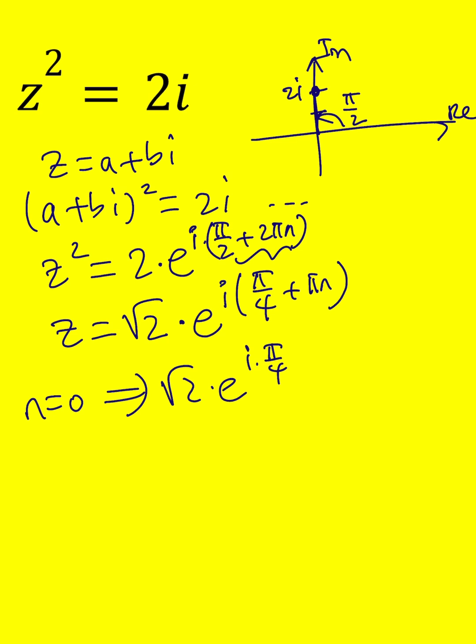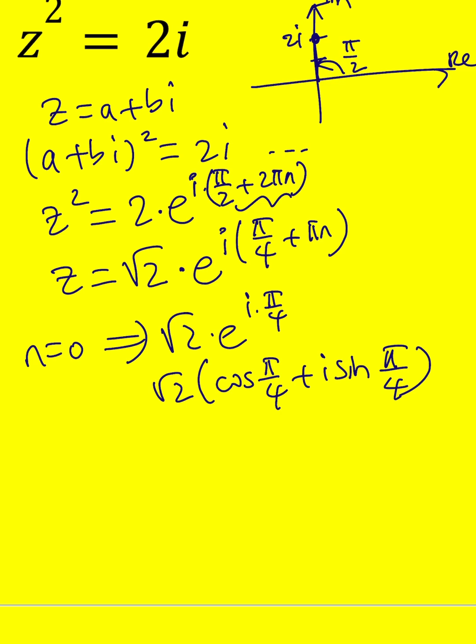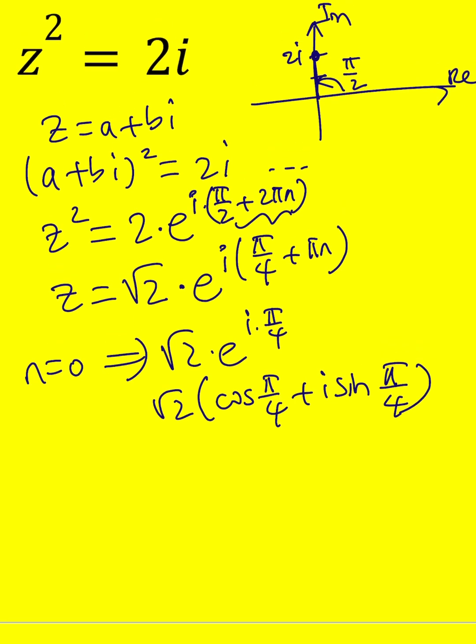Remember that e to the i pi over 4 will give you square root of 2 times cosine pi over 4 plus i sine pi over 4, from Euler's formula or the polar form, right?